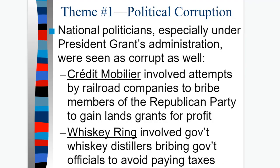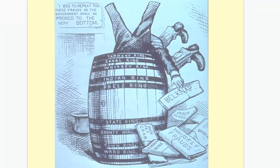There were also national politicians, especially under President Grant's administration, seen as corrupt. The Crédit Mobilier scandal involved railroad companies attempting to bribe members of the Republican Party to gain land grants for profit — getting land for free and profiting later. There was also the Whiskey Ring, which involved whiskey distillers bribing government officials and avoiding paying taxes. There was the Tammany ring, the whiskey ring, the Indian ring, the press ring — everything falling apart and people going a little crazy.